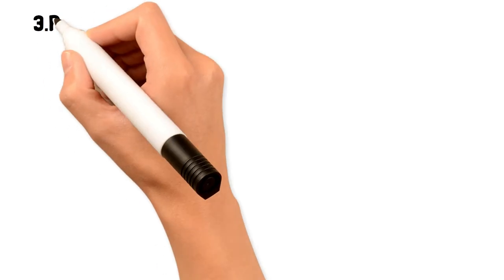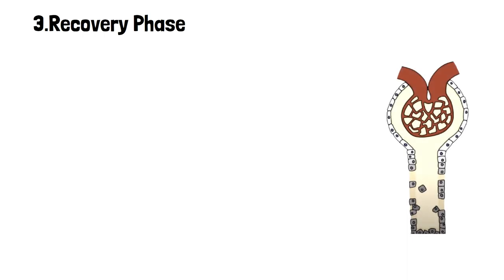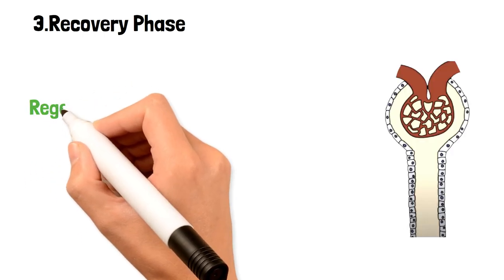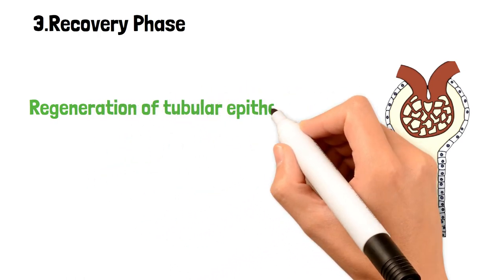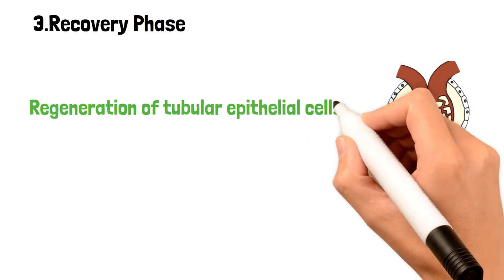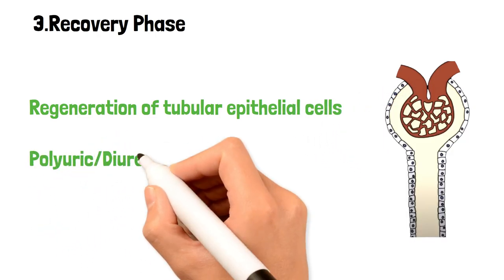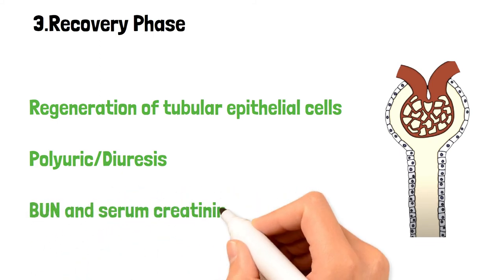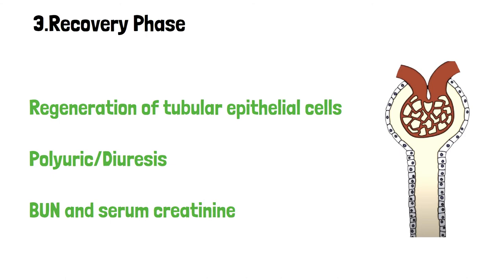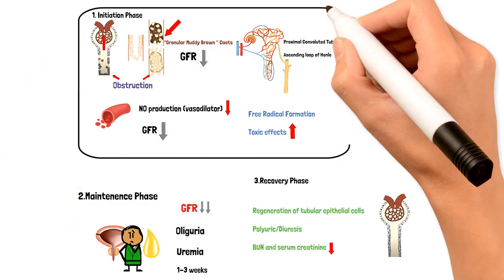Number three: the recovery phase. This is when the renal tubules recover, characterized by regeneration of tubular epithelial cells. During recovery, an abnormal diuresis occurs, meaning a lot of water is lost from the body. A person in the recovery phase of ATN will pass a lot of urine, and the accumulated urea nitrogen and creatinine will pass along with that urine, decreasing the BUN and serum creatinine levels.